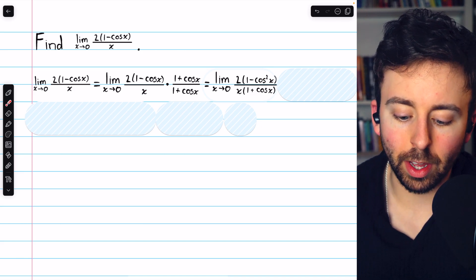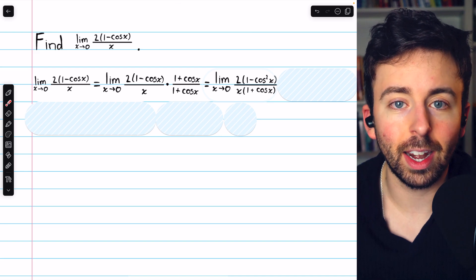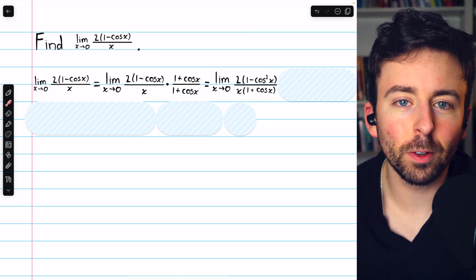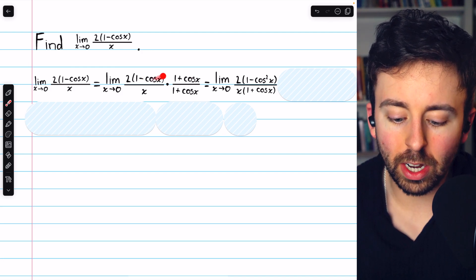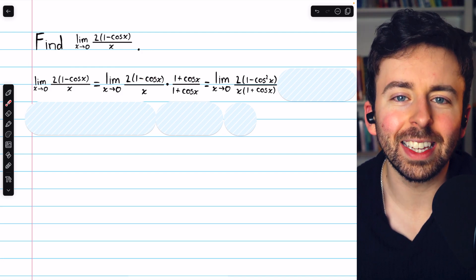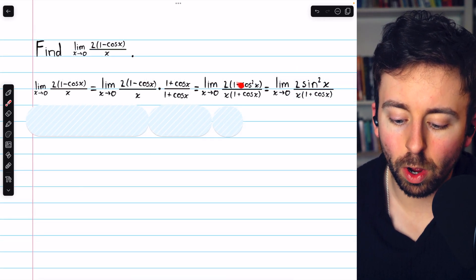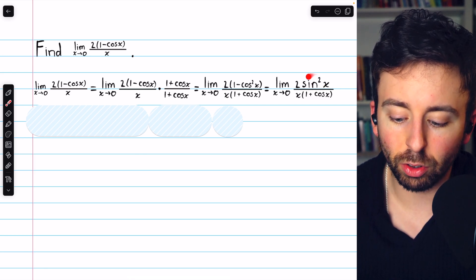In the denominator, we will not distribute. Just leave that as x times 1 plus cosine x. When evaluating these limits, it's usually a good idea to leave things factored unless you have a plan for it. Like in the case of the conjugate, we know multiplying in the numerator is going to get us closer to our goal. Because once we distribute and get that 1 minus cosine squared x, we can replace it with sine squared of x.